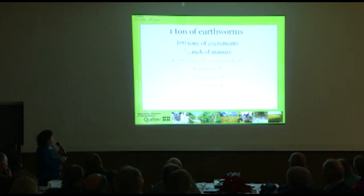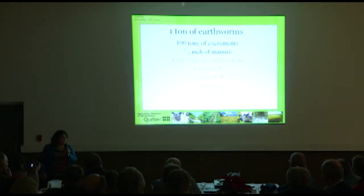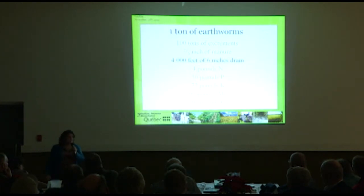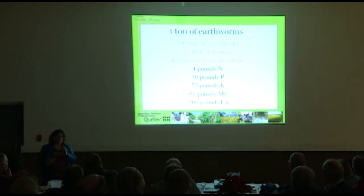One ton of earthworms per acre will produce a hundred tons of excrement, which is about two-thirds of an inch of manure. That equates to roughly 400 to 4,000 feet of six-inch drain tile equivalent, and it will produce that amount of nutrients.